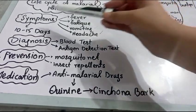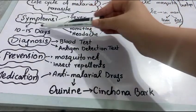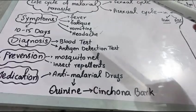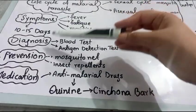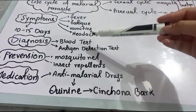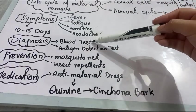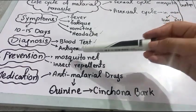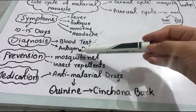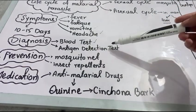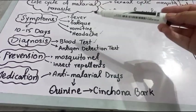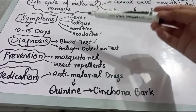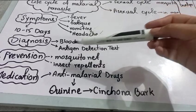The symptoms appear after 10 to 15 days after the mosquito bite. Diagnosis tests are available: first you do a blood test, then an antigen detection test, and after that you can easily diagnose whether a person has malaria or not.